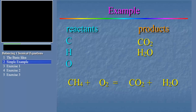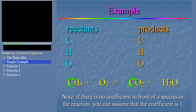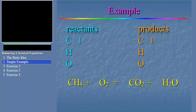We'll start with carbon. Notice that there is one carbon on the reactant side and one on the product side, so we don't have to adjust the coefficients there at all. Let's move on to hydrogen. On the reactant side I have four hydrogen atoms, but on the product side I have only two. To rectify this, I put the coefficient 2 in front of the water molecule, representing the production of two water molecules, thus doubling the number of hydrogen atoms in the products. That takes care of hydrogen. Now, what about oxygen?